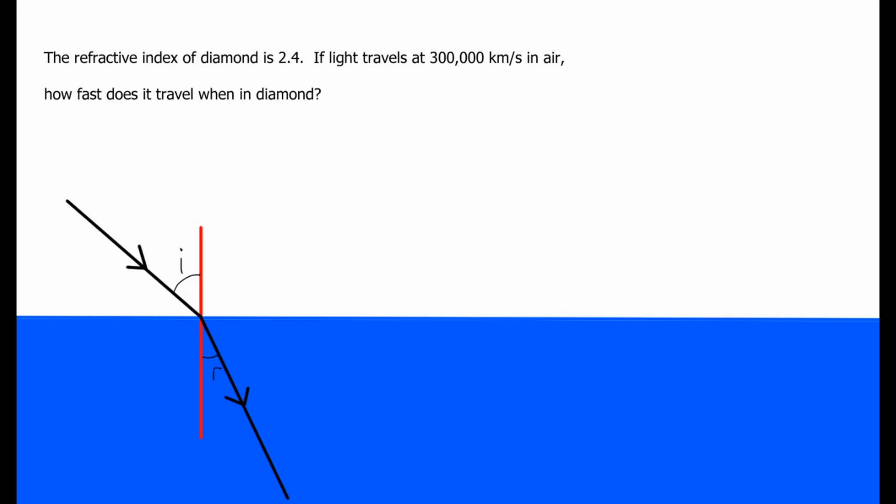The first thing to do in any question is to write down all the things that we know and all the things we're trying to find out. We know that the refractive index of diamond is equal to 2.4. We know that the speed of light in a vacuum is equal to 300,000 km per second, and the thing we're trying to find out is the speed of light in the diamond.